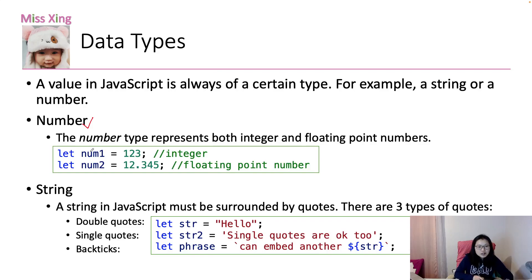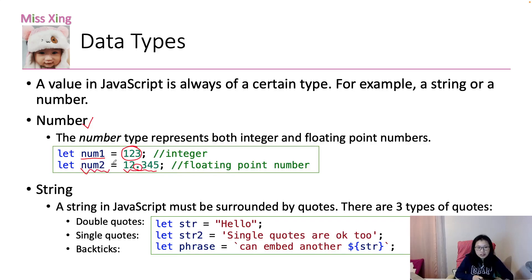Here I have a variable defined with let, and I assign the value 123. 123 is a number and this is an integer number. But in JavaScript, we don't have integer — instead, the type of the variable is a number type. And here we have another number which is a floating number, 12.345, and in JavaScript the type of that variable is also a number. So that's a special thing in JavaScript compared with Java — only one type represents all the numbers, which is the number type.